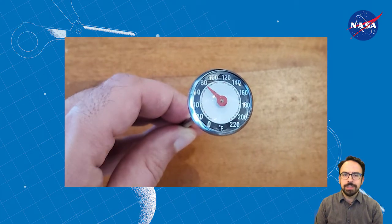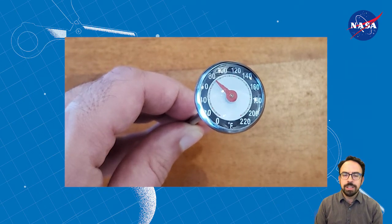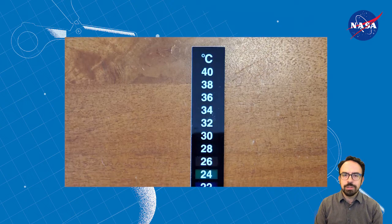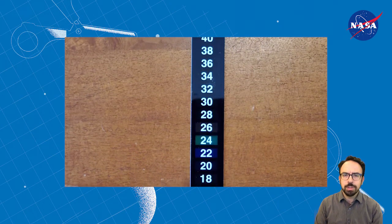If you have a kitchen thermometer with a metal probe that goes into food, or a stick-on thermometer, you can use those to measure the temperature of the water. I didn't use one in my experiment, but I'll show you how you can use one a little later.